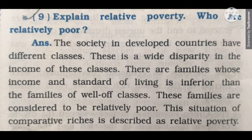Relative poverty जादातर जो पूरी तरीके से developed countries हैं, वहाँ पे देखने को मिलता है। इसके तहत यहाँ पे rich class भी मिलती है, middle class भी मिलती है, और poor class भी मिलती है। इनके income में बहुत जादा फर्क होता है। जो सबसे गरीब families हैं — जो bottom 30 number पे आती हैं — उनको हम लोग relative poverty में consider करते हैं।